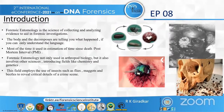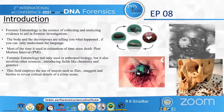Starting with the introduction, forensic entomology is the science of collecting and analyzing evidence to aid in forensic investigation. The body and the decomposers are telling you what happened if you can only understand the language. Forensic entomology is the use of insects and their arthropod relatives that inhabit decomposing remains to aid legal investigation.